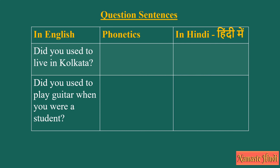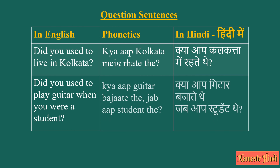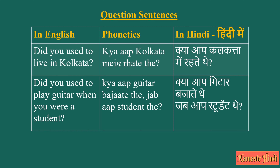Let's look at some question sentences. Did you used to live in Kolkata? — Kya aap Kolkata mein rahte the? Did you used to play guitar when you were a student? — Kya aap gitar bajate the? Jab aap student the? When used as a conjunction in Hindi is 'jab'.